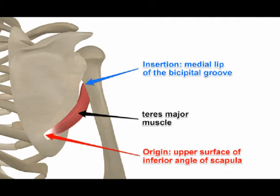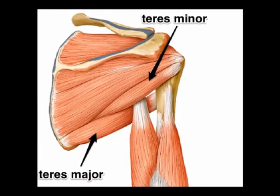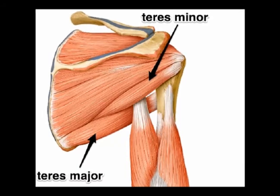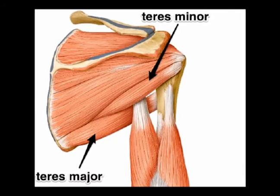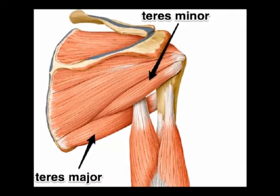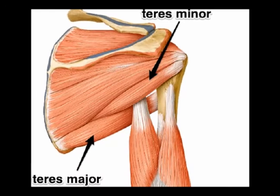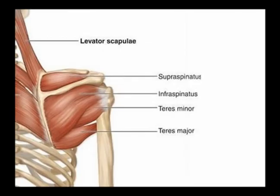This is the teres major muscle, an extremely important muscle. I want to stress the concentric actions of the teres major: shoulder adduction and shoulder internal rotation are the concentric actions of the teres major muscle.